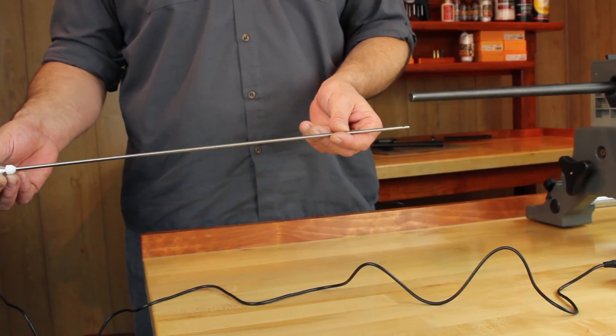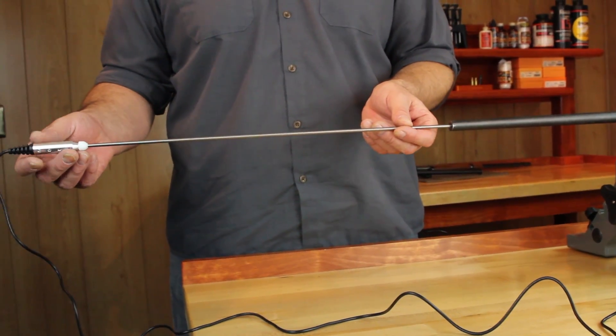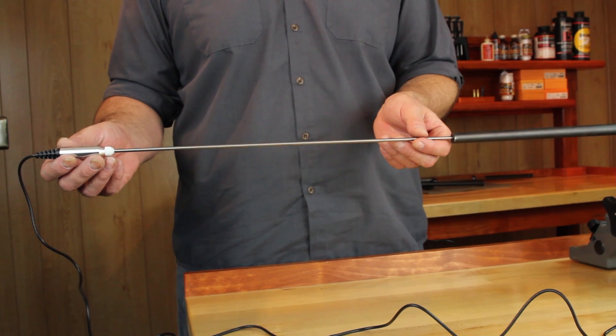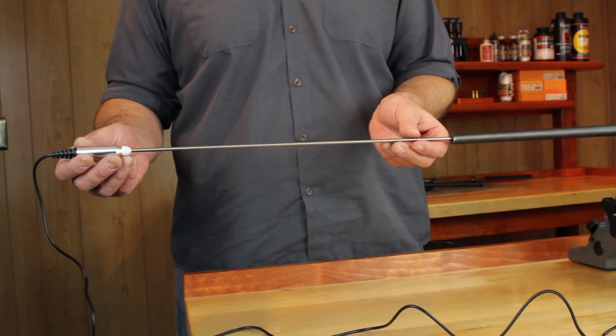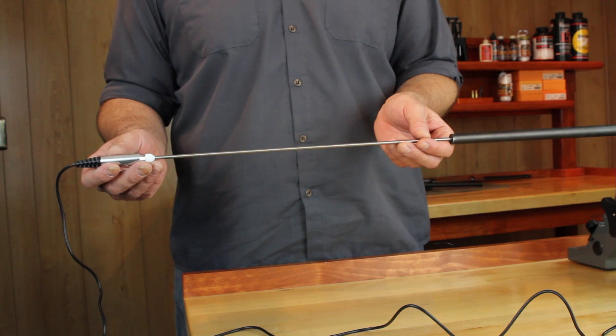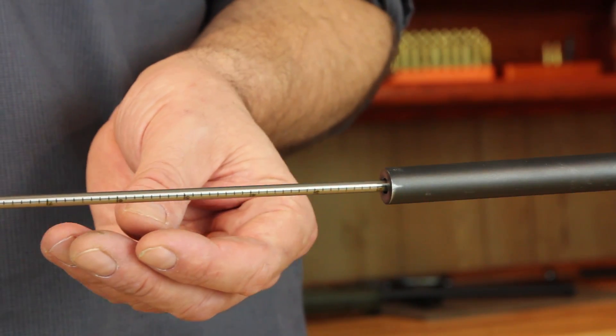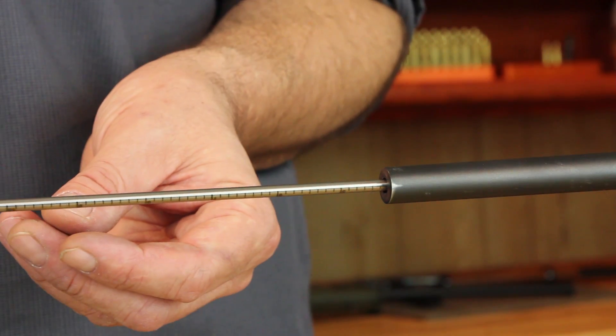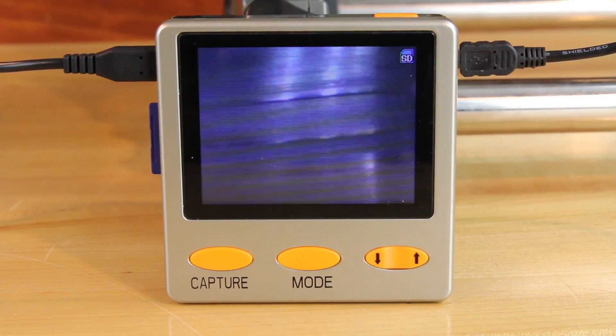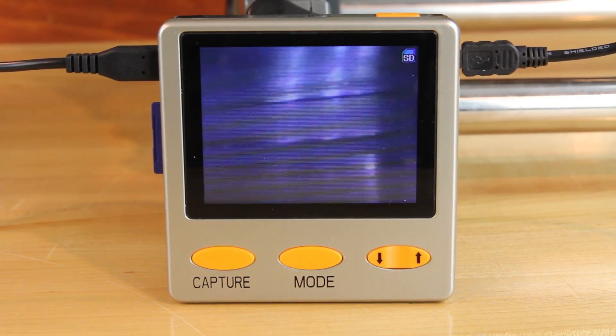Once the Bore Cam is powered on, you can start to insert the wand into the muzzle of the firearm, always making sure the firearm is unloaded and safe. As you start the wand down the barrel, you see the lands and grooves of the rifling. You may see some glare from the light. You can either adjust the light intensity or move the wand closer to the wall of the barrel.